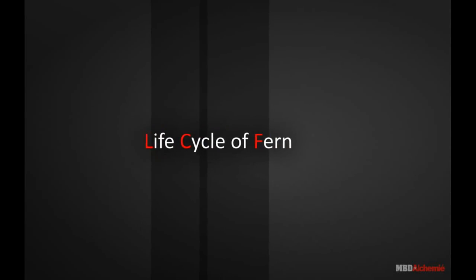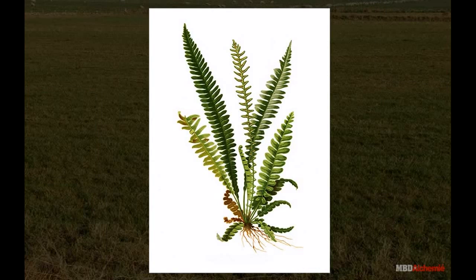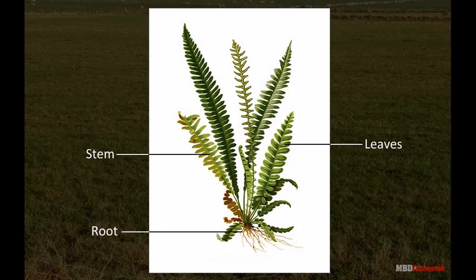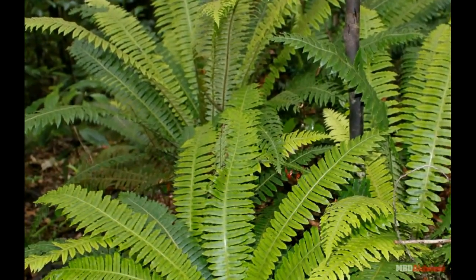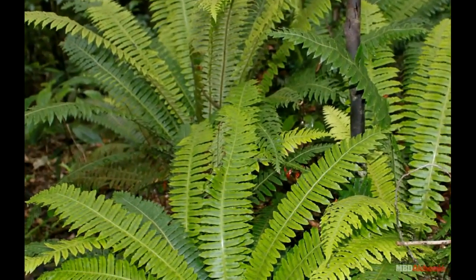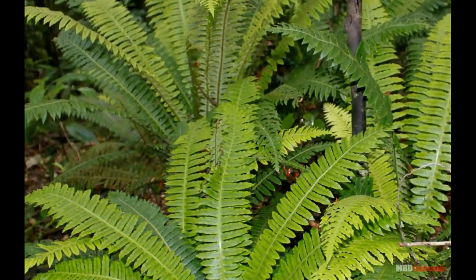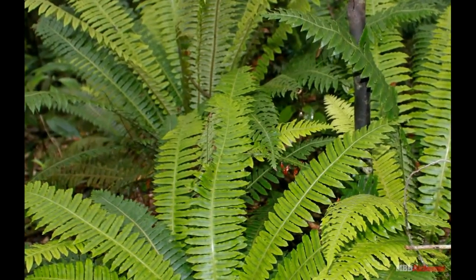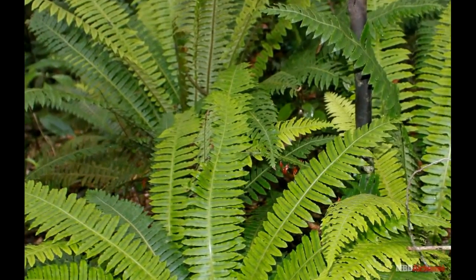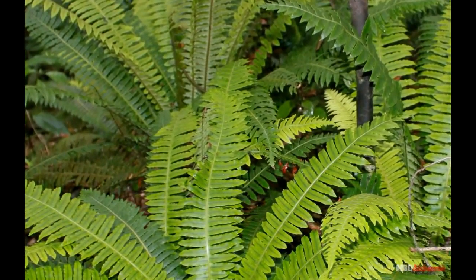Life Cycle of Fern. The plant body of fern is divided into root, stem and leaves. Leaves are the only aerial part of the plant body. Stem is represented by underground rhizome. Rhizome is densely clothed with numerous scales or rhamenta.